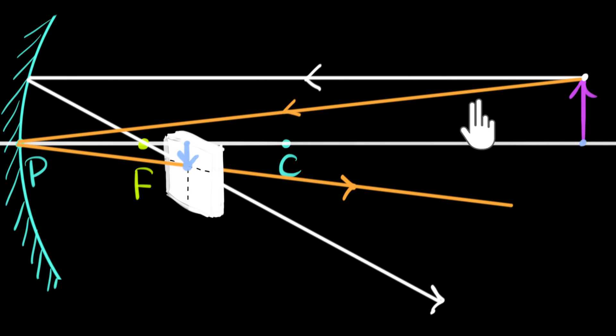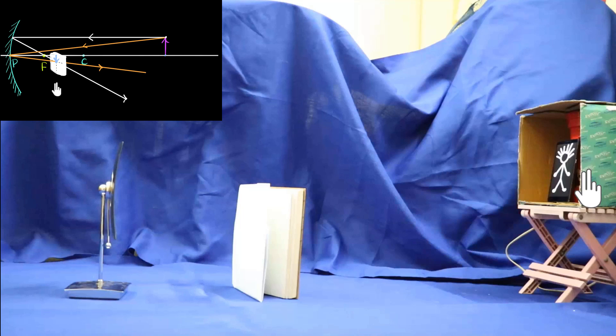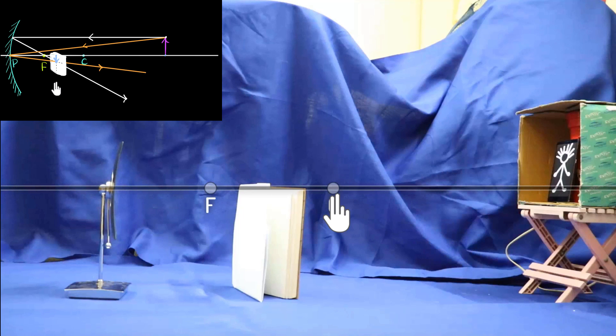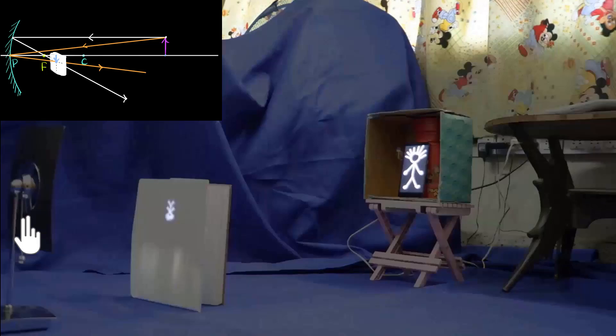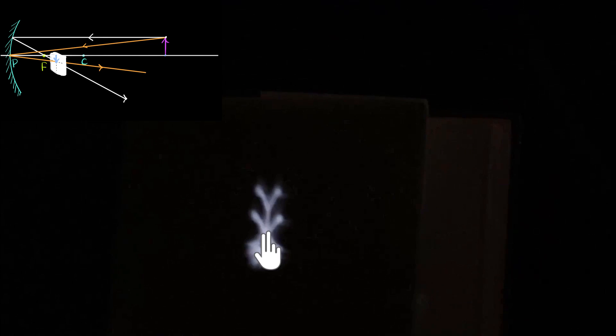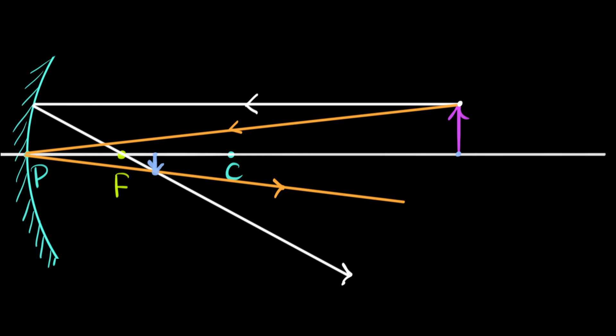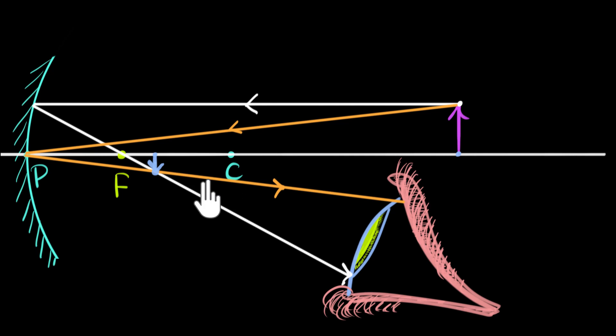Here is the actual setup: we have the concave mirror, an object placed far beyond the center of curvature, and a screen. Rays of light from the object get focused, and with the screen positioned at that focal point, if we dim the lights, you can see a beautiful, sharp, inverted image being formed. Looking directly into the mirror also shows that real inverted, diminished image.